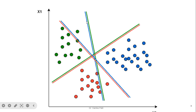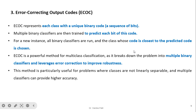In the visual representation of One versus One, different decision boundaries are shown between each pair of classes: blue and red, red and green, and green and blue.